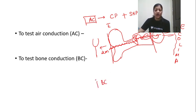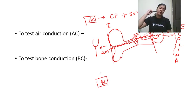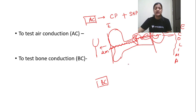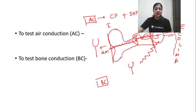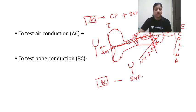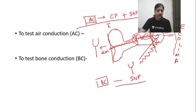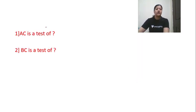What is bone conduction? For bone conduction, you vibrate a tuning fork and place it over the mastoid process. The sound is now transmitted directly to the cochlea — it bypasses the external ear and middle ear. Since the sound goes directly to the cochlea, bone conduction measures only the sensorineural pathway. So: AC equals conductive pathway plus sensorineural pathway; BC equals only sensorineural pathway.